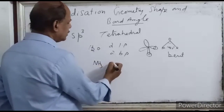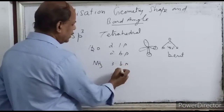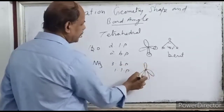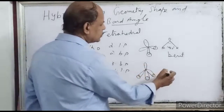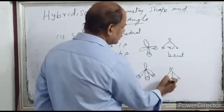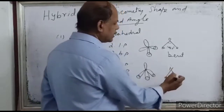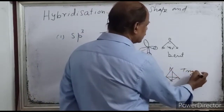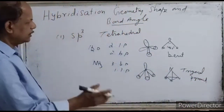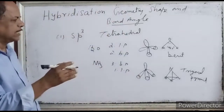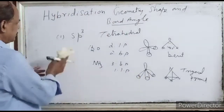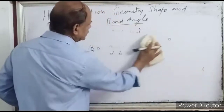In the case of ammonia, there are three bond pairs and one lone pair. The lone pair is at the top and the hydrogens form the base, giving a trigonal pyramidal shape. The geometry and bond angle are determined by the number of bond pairs and lone pairs. That is SP³ hybridization.